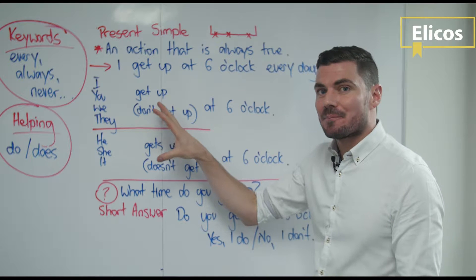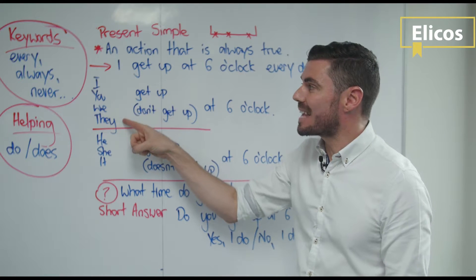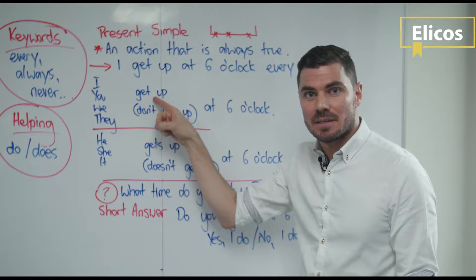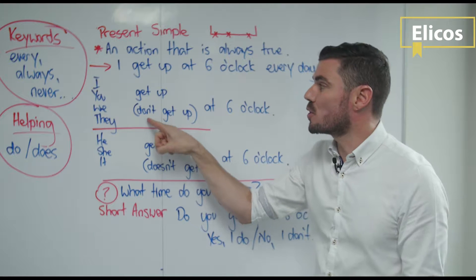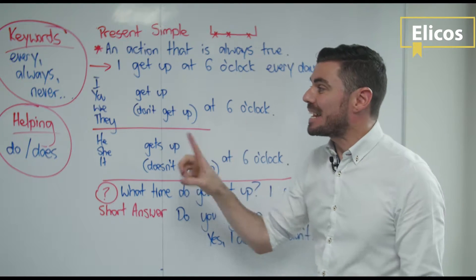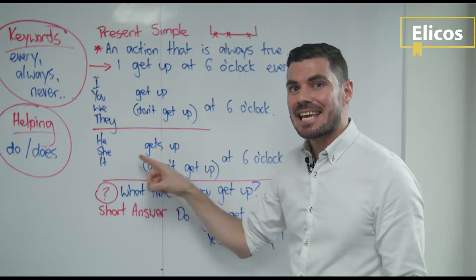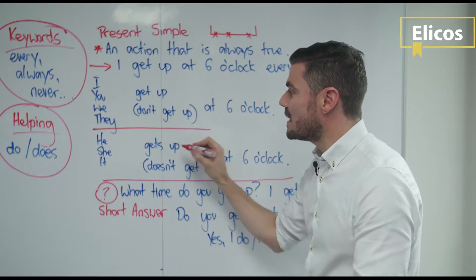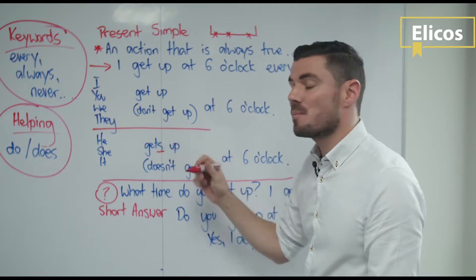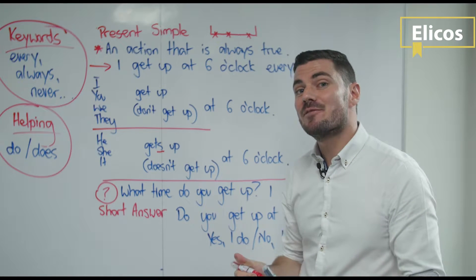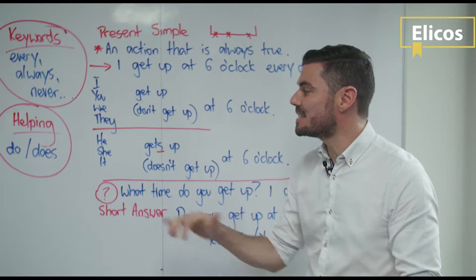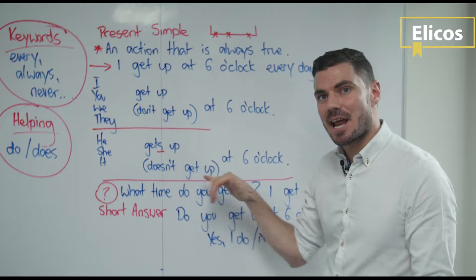The grammar: I, you, we, they get up. The negative: don't get up at six o'clock. But he, she, it gets up. We need an S for the positive. And for the negative, he, she, it doesn't get up at six o'clock.